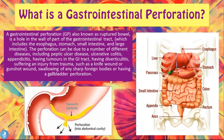A gastrointestinal perforation, also known as a ruptured bowel, is a hole in the wall of part of the gastrointestinal tract, which includes the esophagus, the stomach, the small intestine, and the large intestine. The perforation can be due to a number of different diseases including peptic ulcer disease, ulcerative colitis, appendicitis, tumors in the GI tract, diverticulitis, injury from trauma such as a knife wound or a gunshot wound, swallowing of sharp foreign bodies, or having a gallbladder perforation.